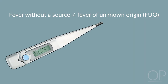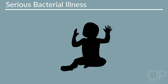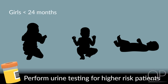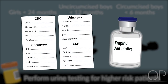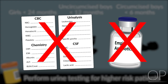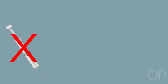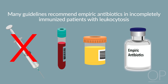Fever without a source is different than fever of unknown origin, or FUO, which is when a fever has been present for 8 or more days. FUO will not be discussed here. Types of serious bacterial illness in this age group include meningitis, periorbital or orbital cellulitis, septic arthritis, osteomyelitis, UTI, pneumonia, and skin infections. Initial evaluation of well-appearing children between 3 to 36 months old with FWS includes urine testing for higher-risk patients such as girls less than 24 months, uncircumcised boys less than 12 months, and circumcised boys less than 6 months. Routine laboratory evaluation and empiric therapy for patients outside of the high-risk age groups is not recommended. It is very important that immunization status is included in the history, and patients with FWS who have not been completely immunized should routinely receive screening blood and urine infectious studies. Many guidelines recommend empiric antibiotics in incompletely immunized patients with leukocytosis.